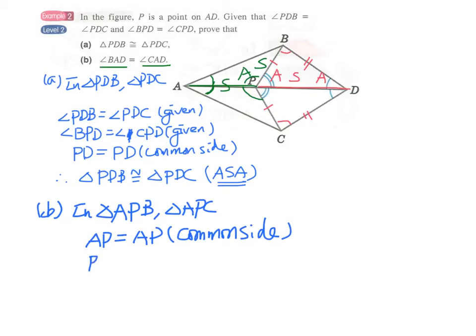And BP equals to CP. This is a pair of corresponding sides of the congruent triangles in part A.